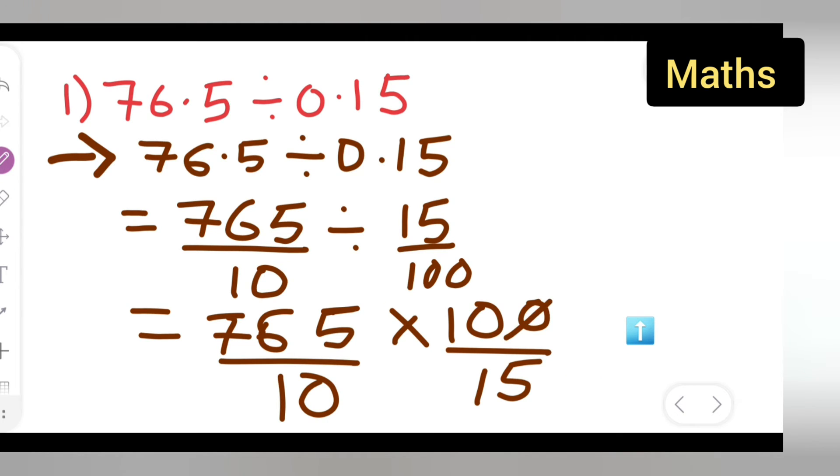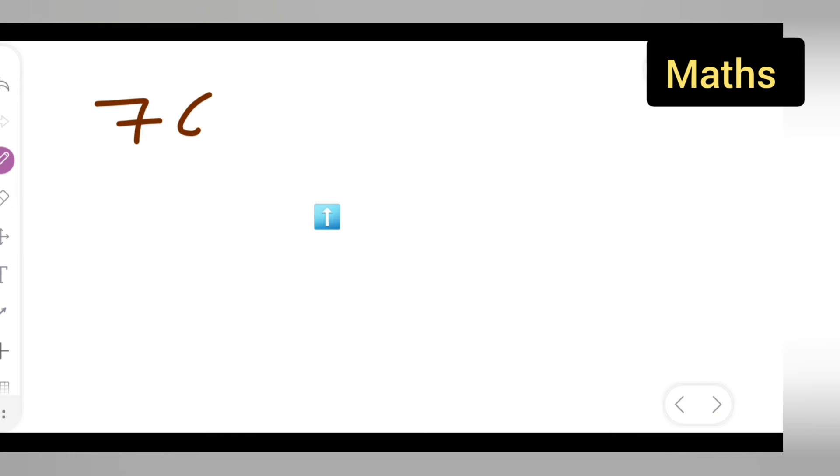Now, what is going to get canceled? Zero, zero will get canceled. Then write down 765 upon what you are getting, multiplied by 10 upon 15.